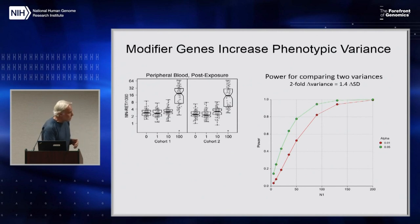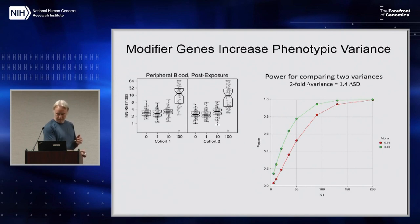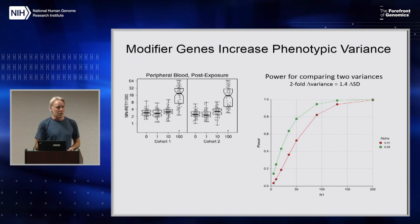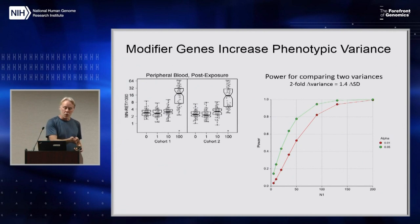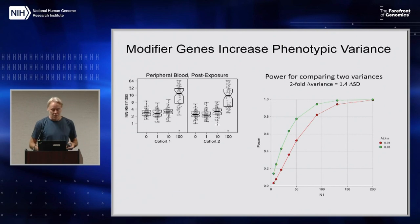Those are a little trickier to detect, but if you look for a two-fold change in variance and you want 80 percent power, you're going to need 100 mice.